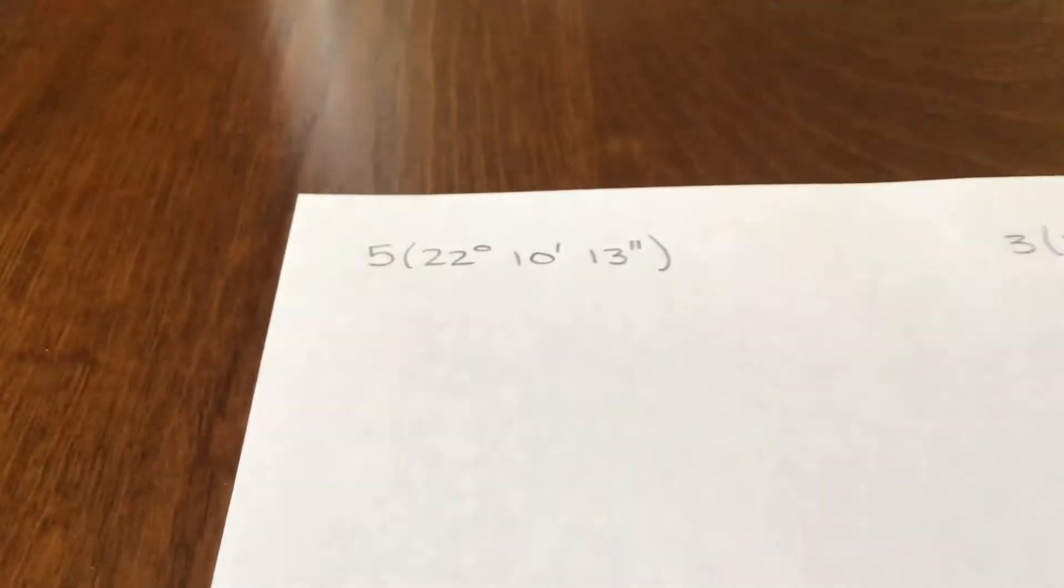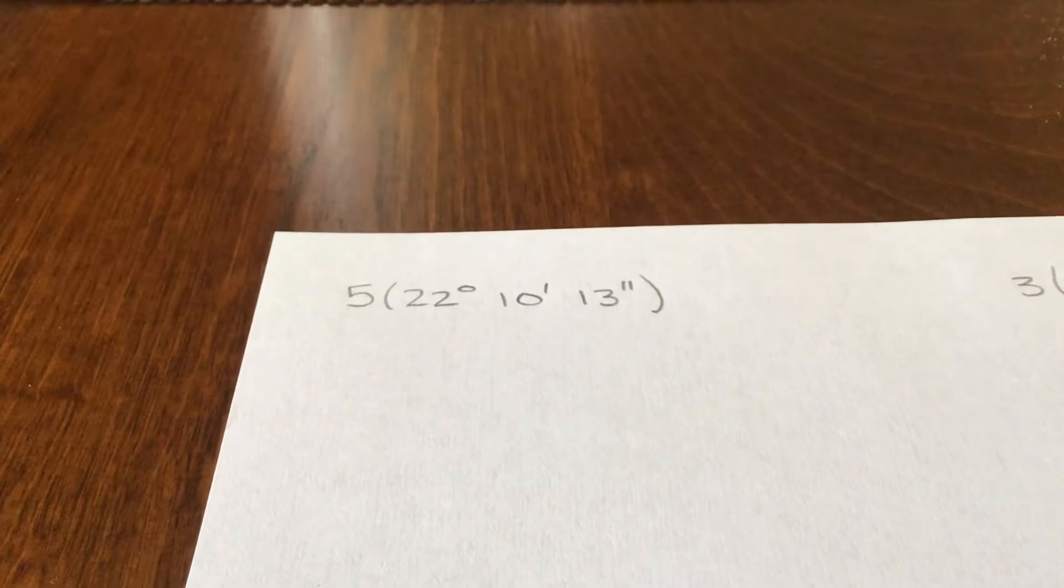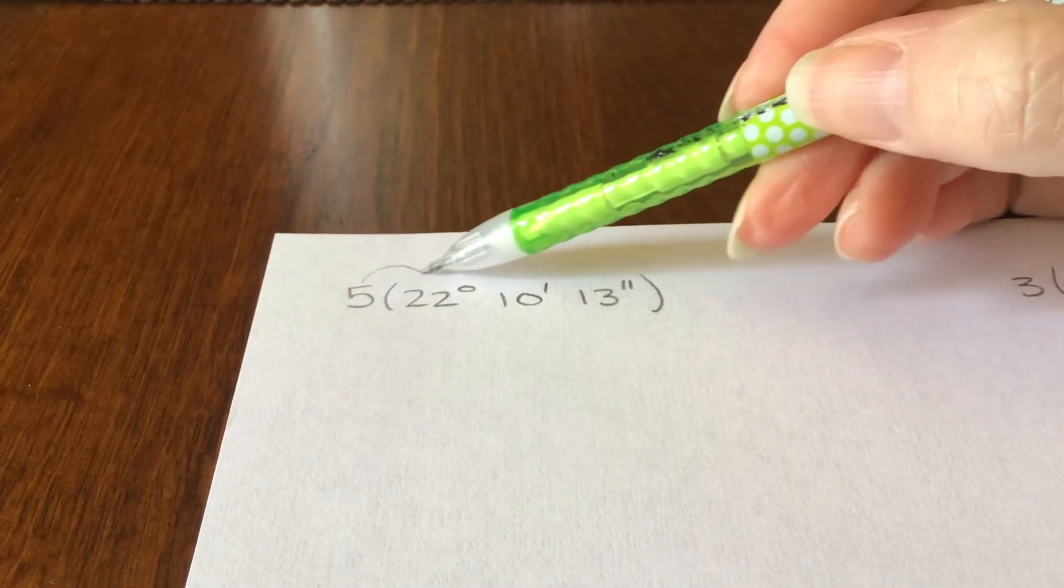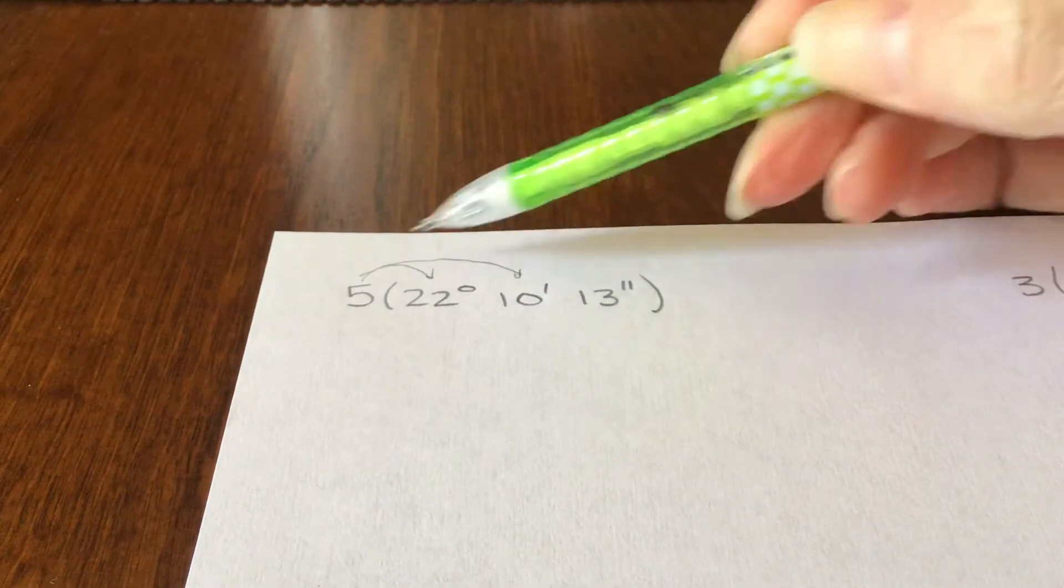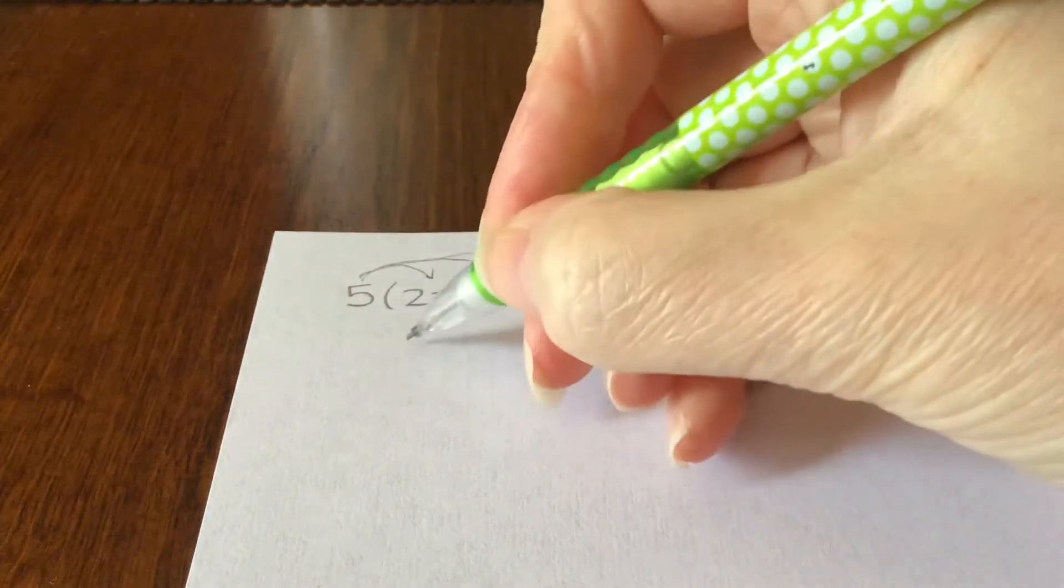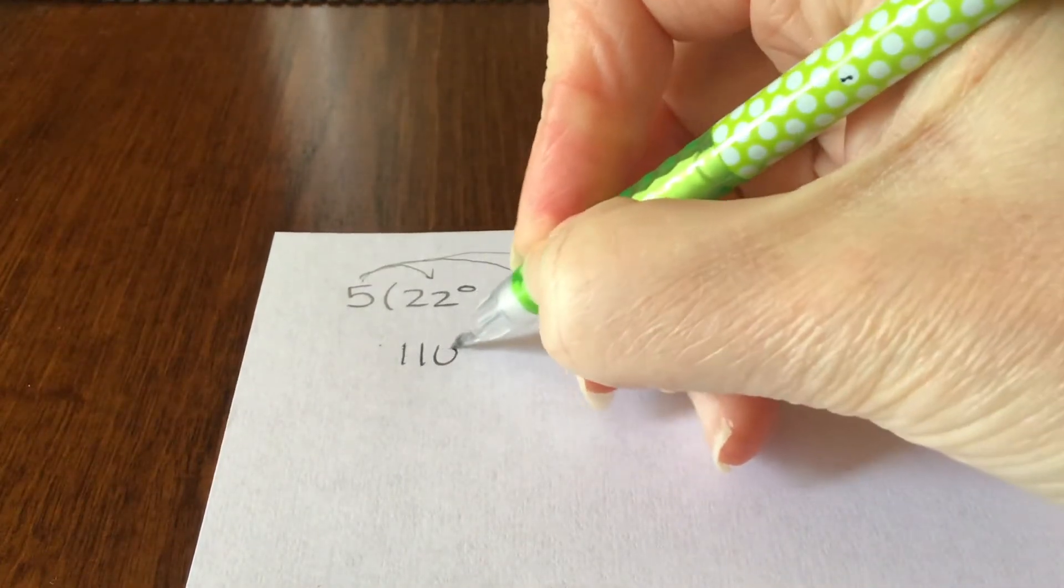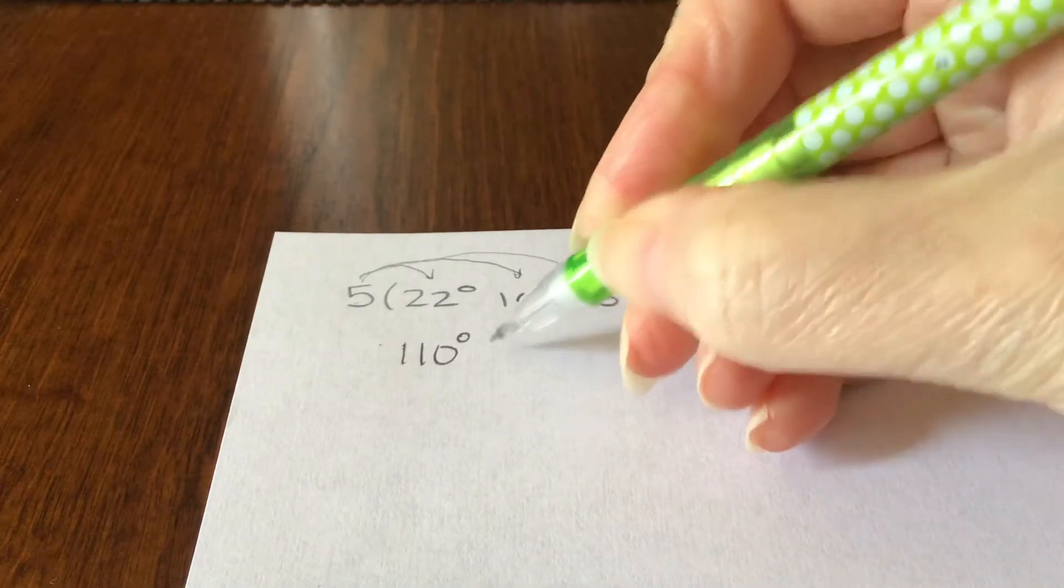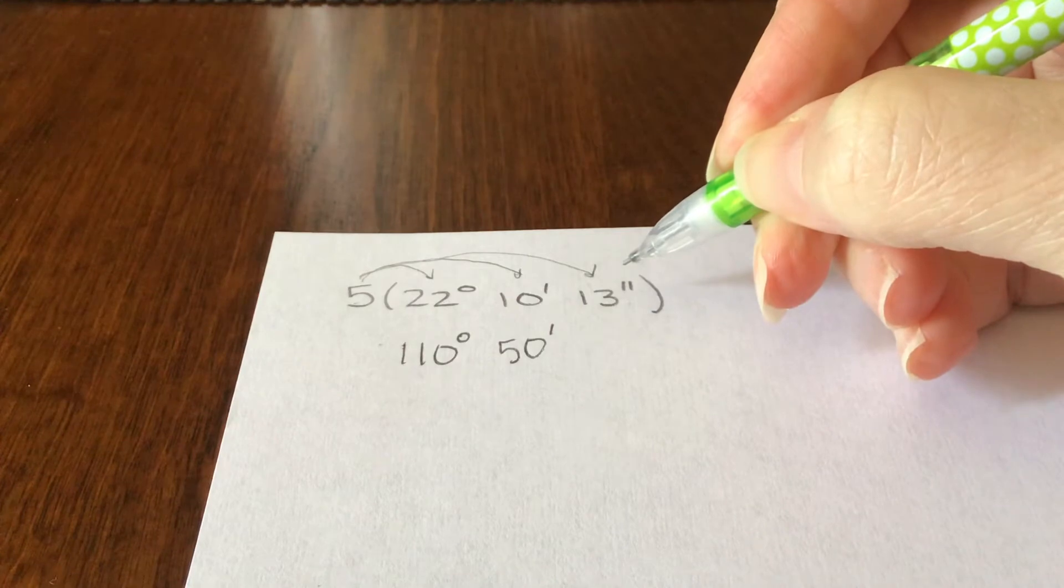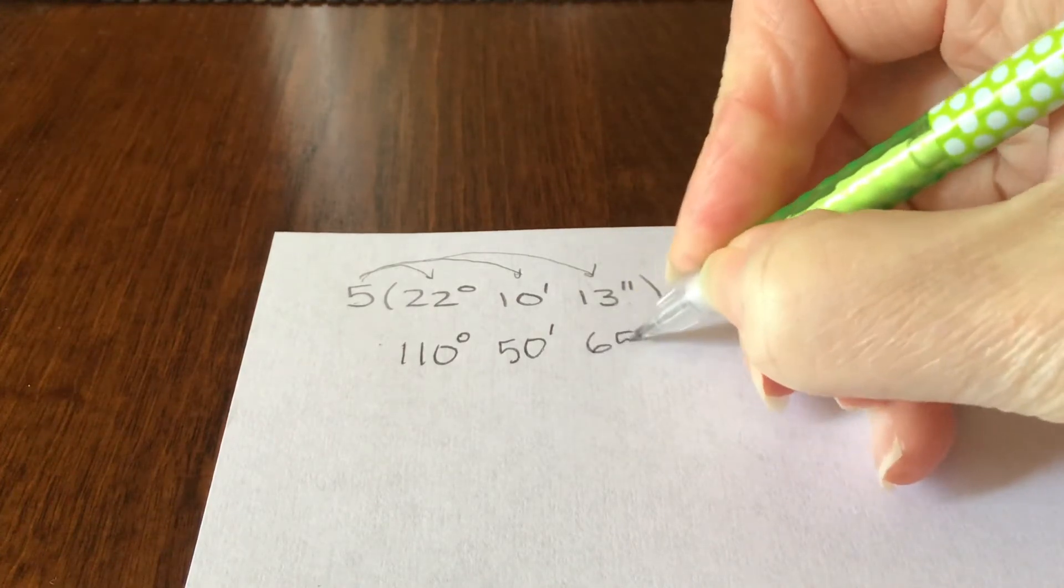First ones I'm going to start with are multiplication ones, like this example right here. It kind of feels like the distributive property where you take this 5 and you multiply it by each piece in the angle. So bear with me, I'm going to use my calculator here. So 5 times 22 is 110 degrees, 5 times 10 is 50, and 5 times 13 is 65 seconds.